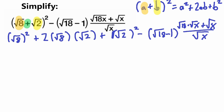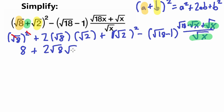Notice that in every term in the numerator we have a square root of x. Now let's simplify what we have so far. Square root of 8 squared: the square root and the square cancel out, leaving simply 8. Then plus 2 times square root of 8 times square root of 2 — I'll keep that for now. Plus square root of 2 squared, and similarly the square root and the square cancel out, leaving 2. Then minus square root of 18 minus 1, which I'll keep as is.